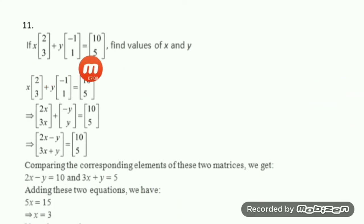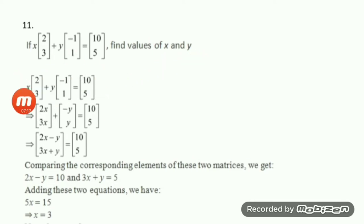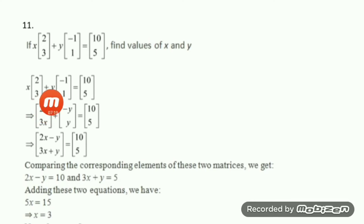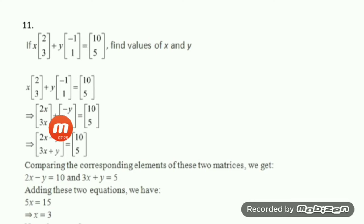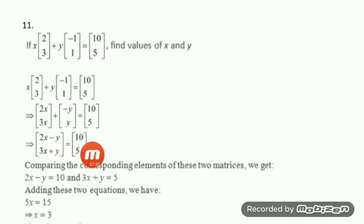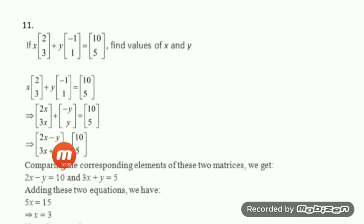Let us proceed to question number 11. It is again a matrix equation and you have to get the values of X and Y. First write down your equation, then do scalar multiplication. It becomes 2X and -Y combined. Adding the matrices gives a single matrix: 2X minus Y, and 2X plus Y equal to [10, 5]. Comparing corresponding elements: 2X minus Y equals 10 and 2X plus Y equals 5.